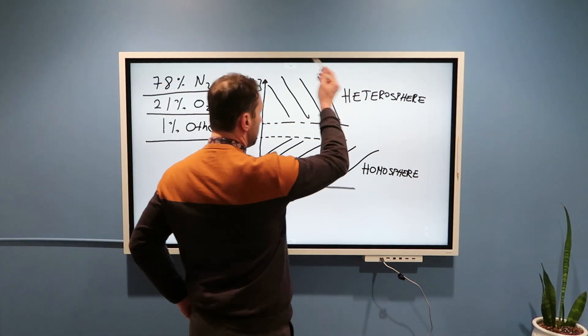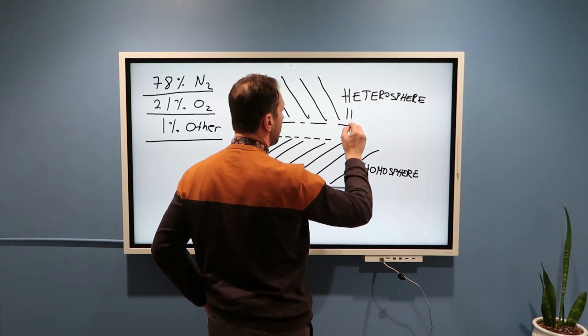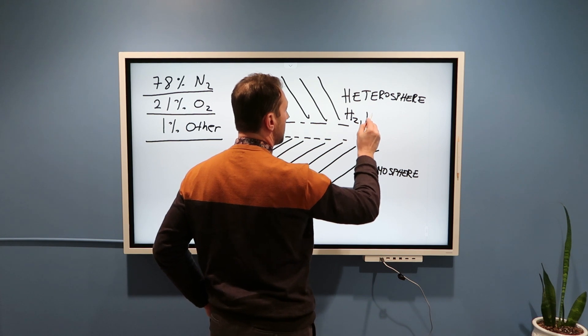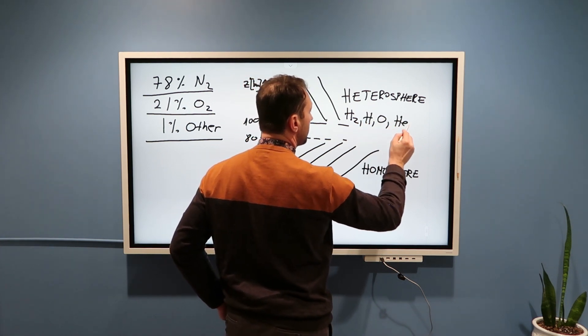So in this part of our atmosphere, we generally have first hydrogen H2, then hydrogen, then oxygen, then helium, and so on.